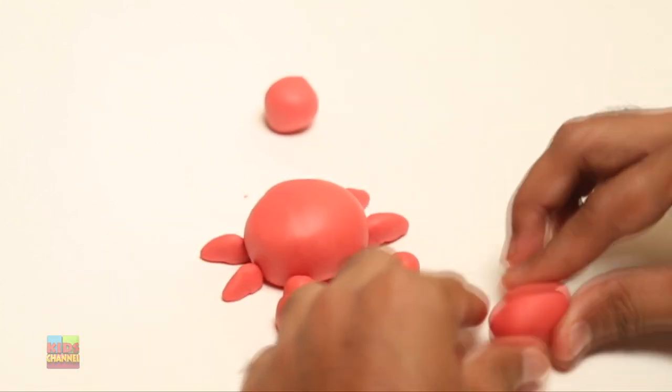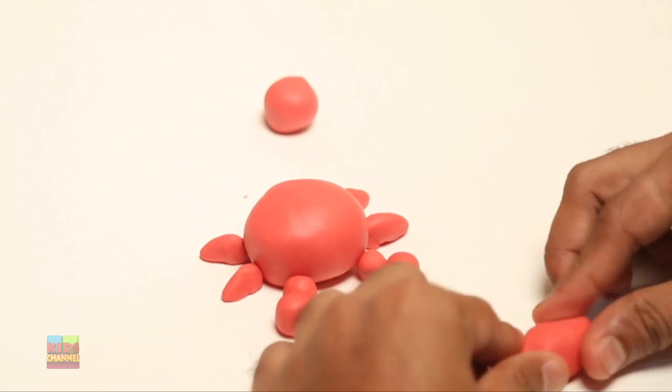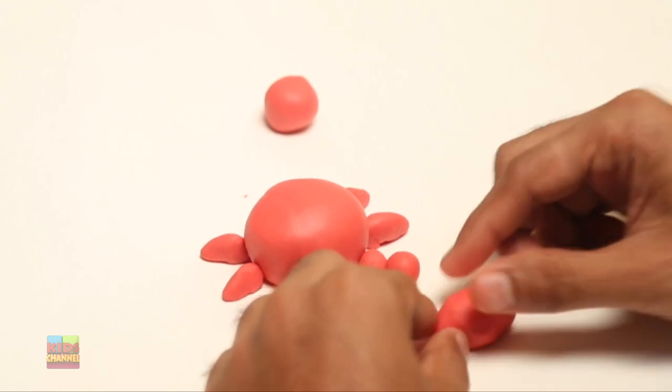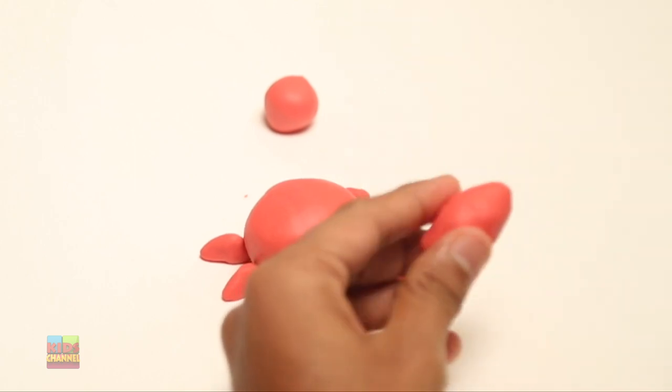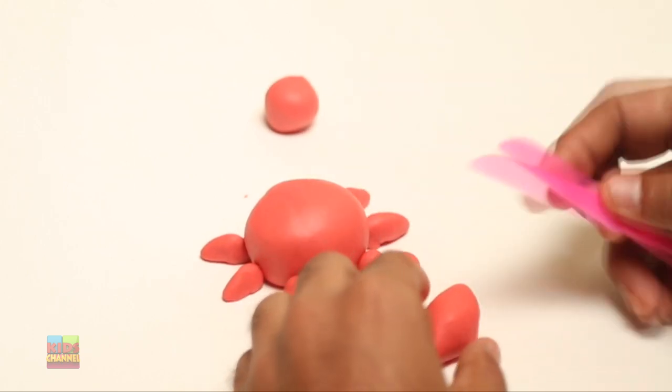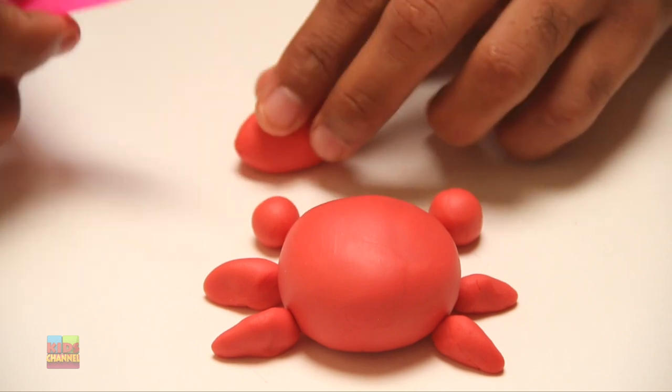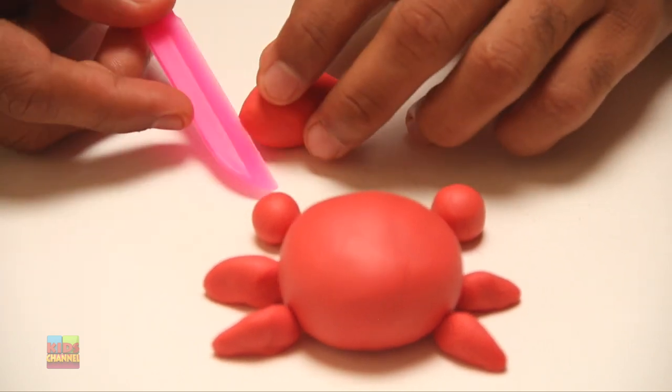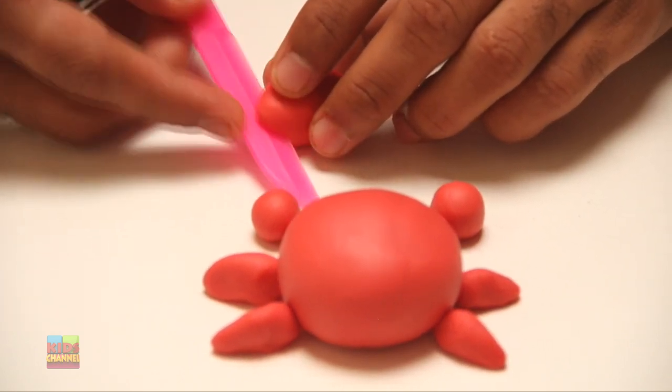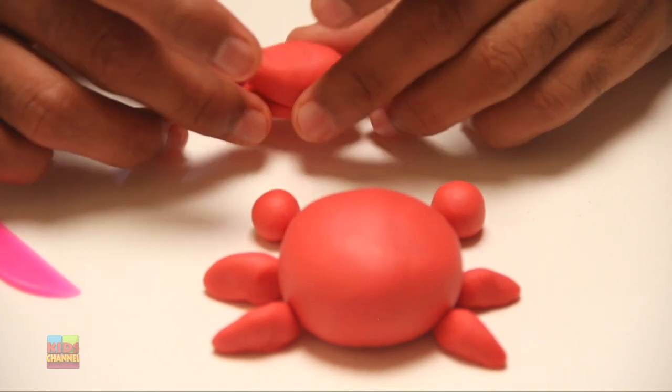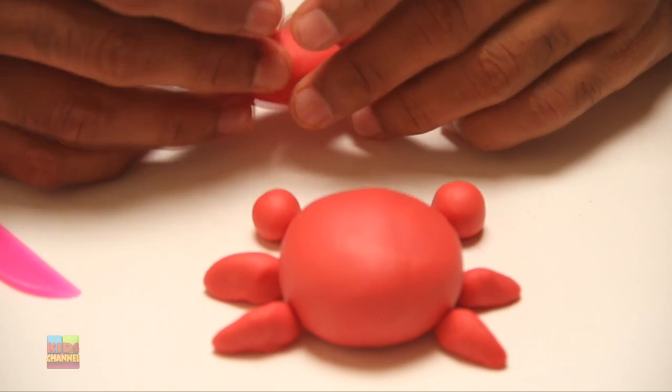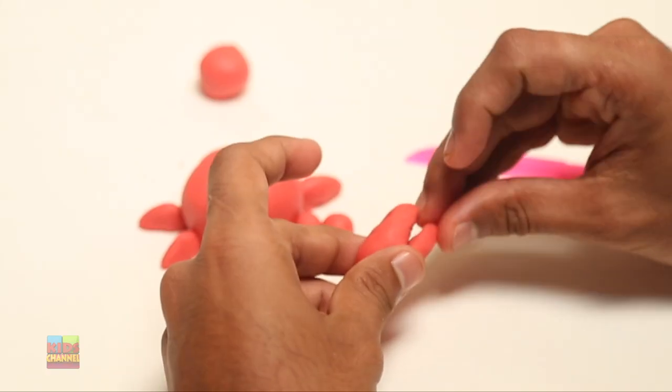We're going to take the two medium-sized balls and with your first two fingers, just roll it back and forth so it's like a tube, a thick tube. And then using the Play-Doh knife, make a cut at one end. And not a little cut. It should go a good amount. You see? And by doing that, we have formed a claw. That looks pretty good.